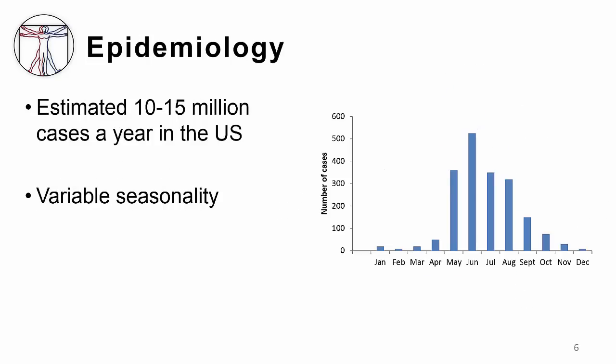Aseptic meningitis and encephalitis is a very common syndrome. It's estimated between 10 and 15 million cases occur in the United States. It occurs throughout the year, but different causes will cause peaks in incidence at different times of the year. As you can see in this slide, more cases occurred in May through September, and this is very typical of enteroviral meningitis.